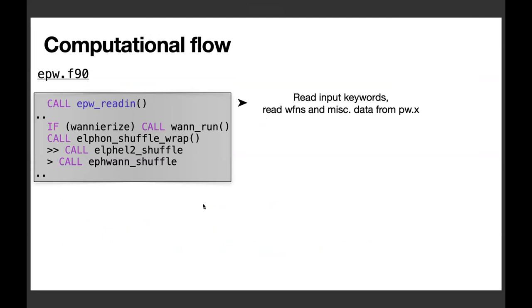Now I turn to the computational workflow of EPW. Looking at the main source file EPW.f90, we can see computational flow in EPW. First, EPW reads input keywords and input wave functions and other data from previous non-self-consistent calculation. Then, EPW generates input to Wannier90 and calls Wannier90 as a library. After Wannierization, electron phonon vertex is calculated on coarse grid, and most other operations are done in the subroutine ephwann_shuffle.